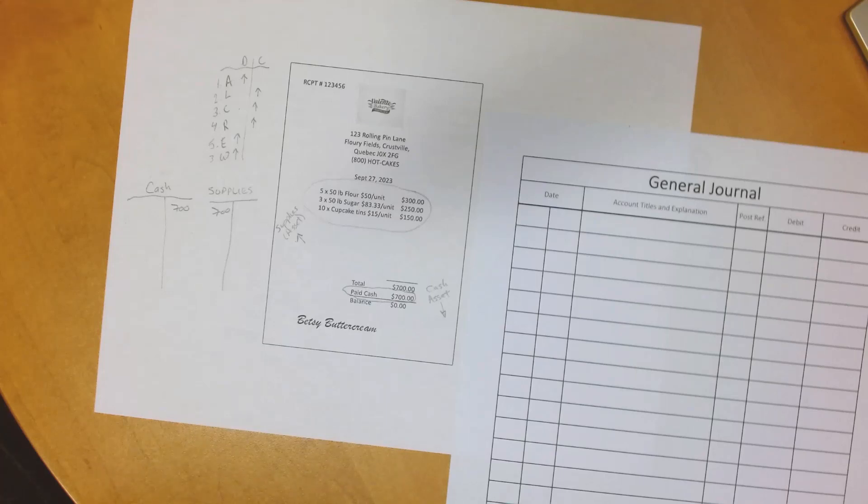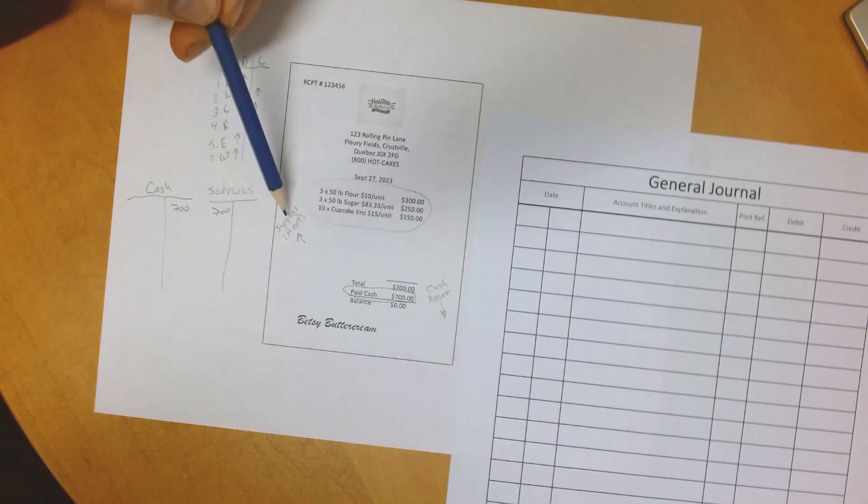If we use the receipt from Valente Bakery, we have already chosen our accounts and put them into a T-account. So, let's see what is next.